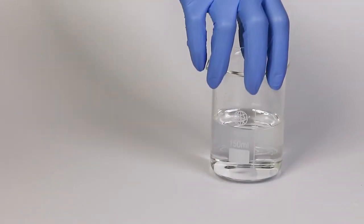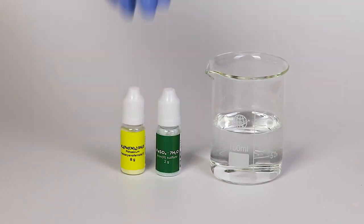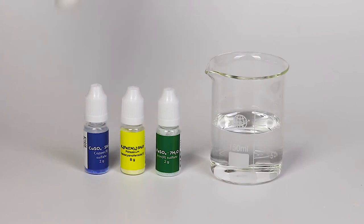For the chemical seaweed experiment, you will need 100 milliliters of water in the beaker, ferrous sulfate, potassium ferrocyanide, copper sulfate and zinc sulfate.